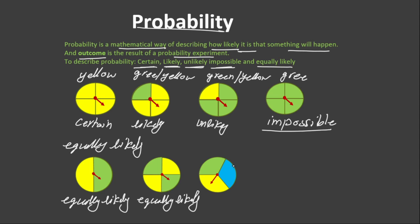In the third spinner also, there are three possible outcomes: yellow, green, and blue. Each of them has got equal chance to happen, so we use equally likely.